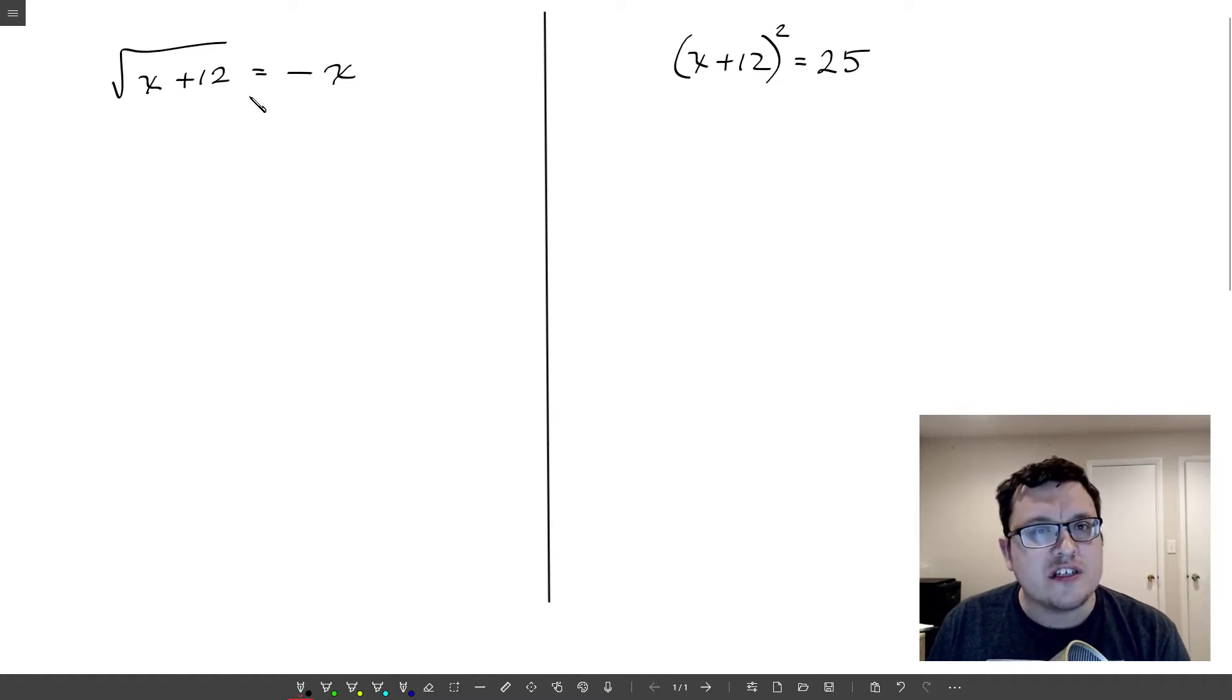Here we've got this question, we need to solve this for x. It's a typical radical equation. If you want, you can pause this video and try it on your own first. The first thing we would typically do in questions like this is square both sides, so we can get rid of that square root on the left.